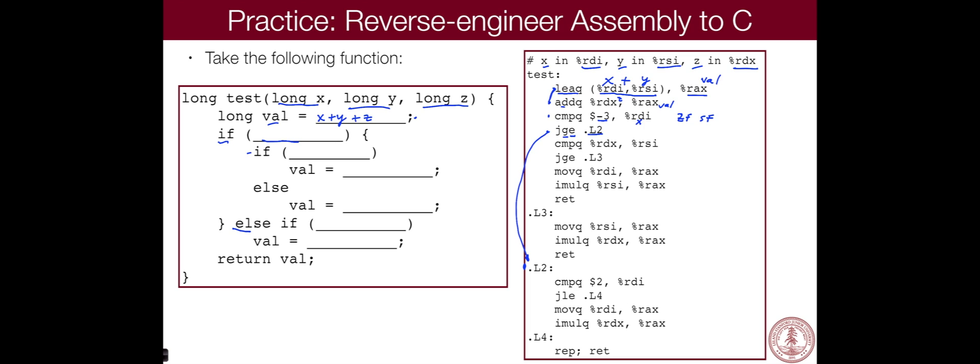And so in this case, it says jump if greater than or equal to, jump if X is greater than or equal to negative three all the way down here, meaning that this has to be if X is less than negative three.